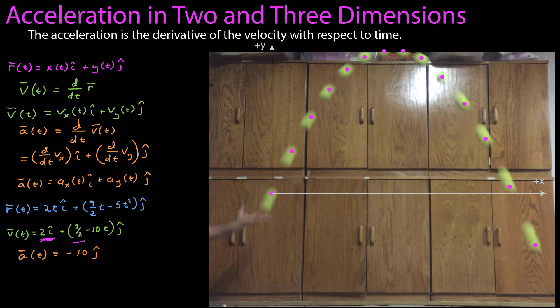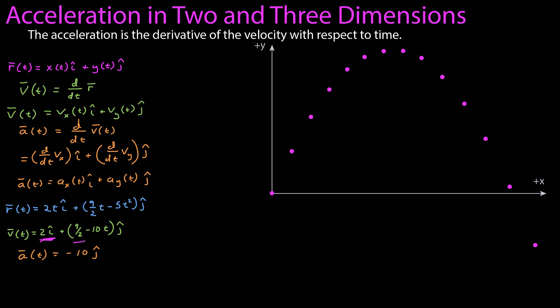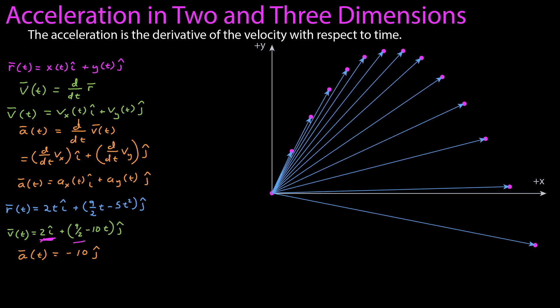It had left my hand by this point and had not yet hit the ground. That gives us a clean picture of our motion diagram. Those are our position vectors that showed us how the position was changing as a function of time.